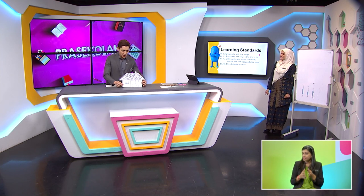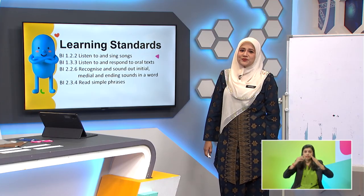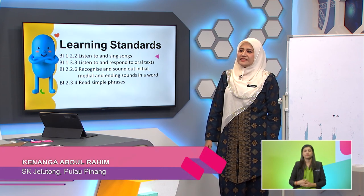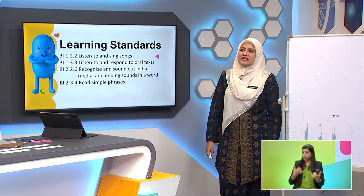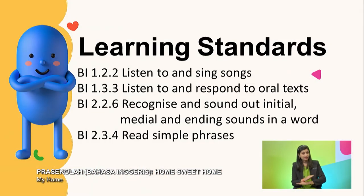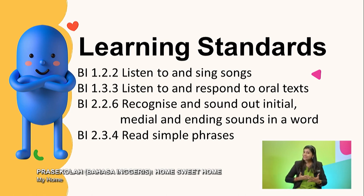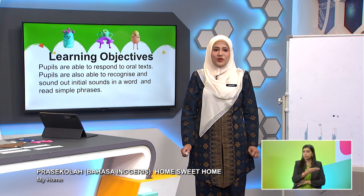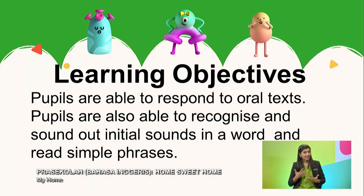Hi, I'm fine, Hanif. It's so nice to see you. I think you're as energetic as her. And I'm curious — there's a house in front of me here. Are we going to learn about houses? Yes, we are going to learn about houses. Our title today is Home Sweet Home. Our learning standard will be BI 1.2.2, listen to and sing songs; BI 1.3, listen to and respond to oral texts; BI 2.2.6, recognize and sound out initial, medial and ending sounds in a word; and read simple phrases. Our learning objectives: pupils are able to respond to oral texts, recognize and sound out initial sounds in a word, and read simple phrases.